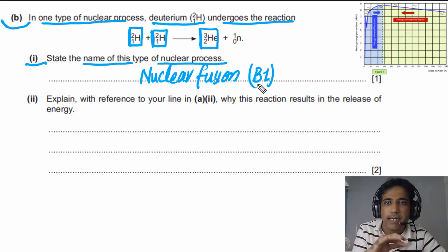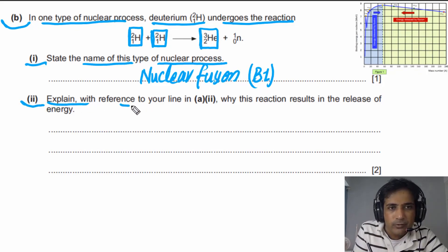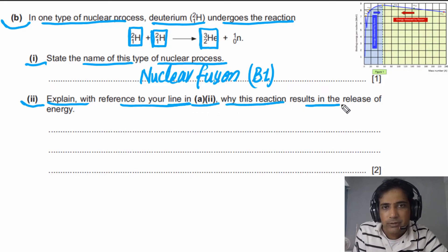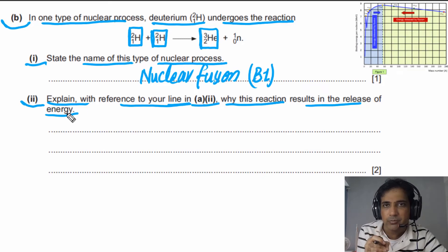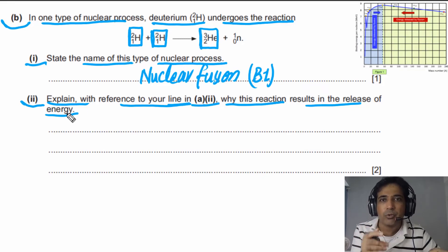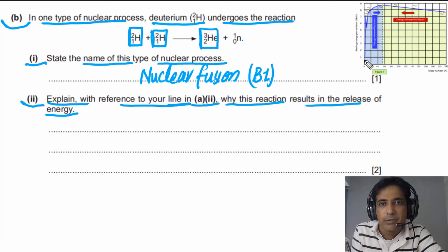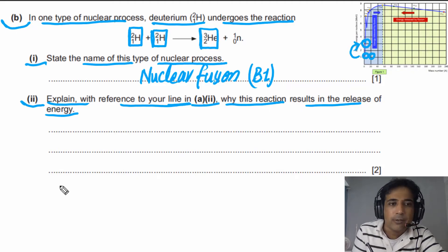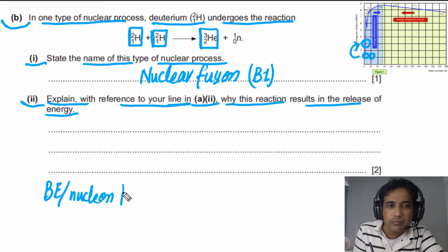For part 2, we need to explain — with reference to the graph — why this reaction results in the release of energy. Energy is released when binding energy per nucleon increases. Here, two deuterium nuclei combine to form one heavier helium nucleus, and we can see from the curve that binding energy per nucleon is increasing in this reaction.